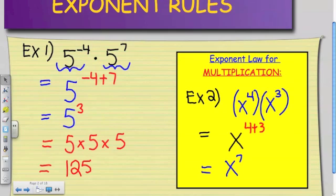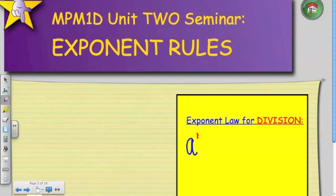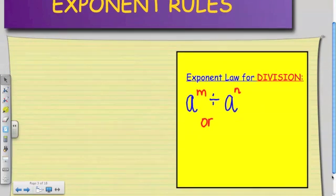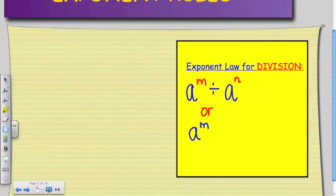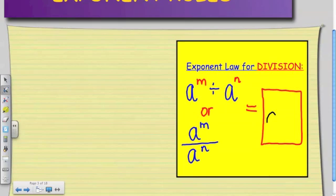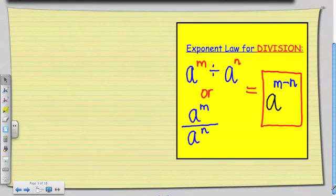Now we're going to talk about the exponent law for division. A to the power of m, but this time we have divided by a to the power of n. Then this can also be written as a to the power of m divided by a to the power of n. For both of those answers, we are going to get this formula: a to the power of m minus n.